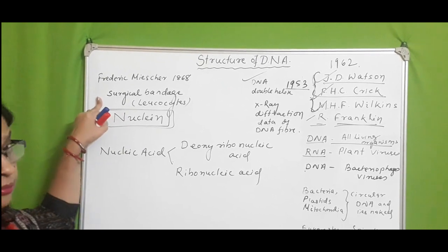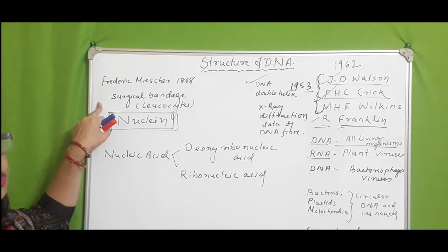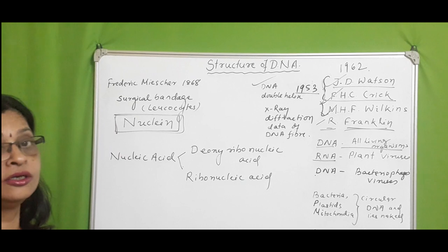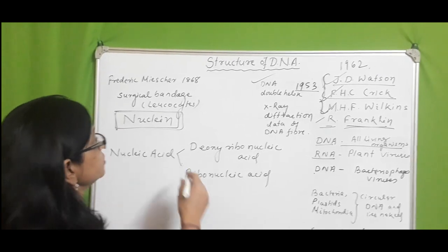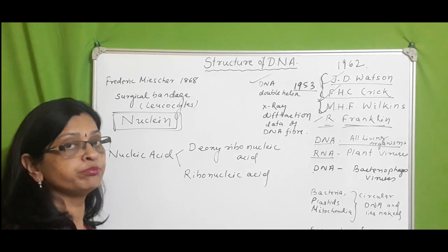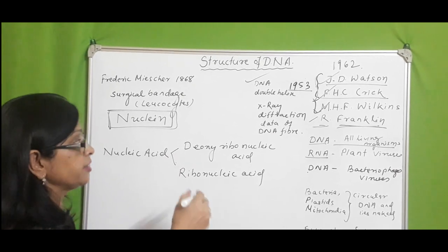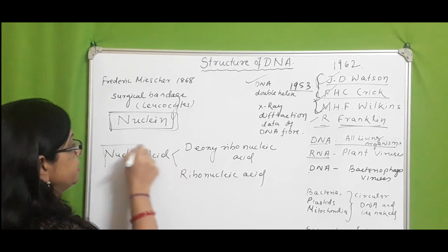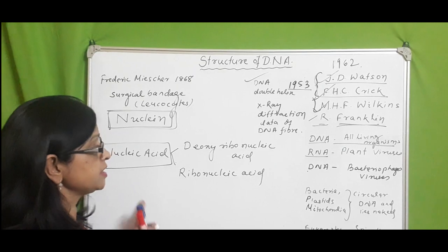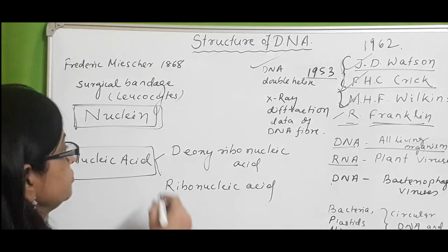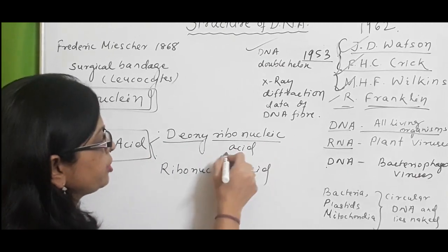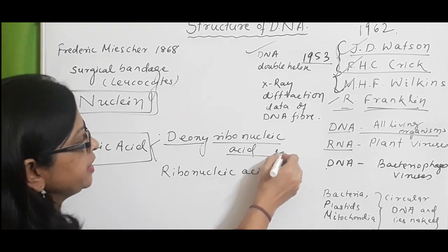The three scientists got the Nobel Prize in 1962. Frederick Griffith first discovered the nuclei of leukocytes — the WBCs — and named it Nuclein. Later, Nuclein was found to be composed of protein and some organic acids. That organic acid was later named Nucleic Acid, which is of two types: Deoxyribonucleic Acid, or DNA, and RNA.